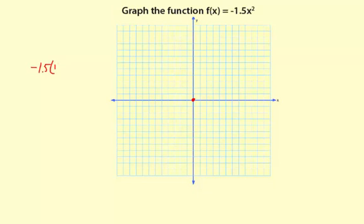-1.5 times 1 squared is just -1.5 times 1, or -1.5. That means we'll go right 1 and then down 1.5. We're going down because we have a negative 1.5.